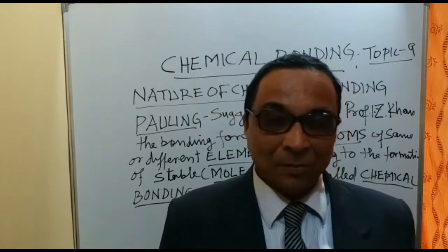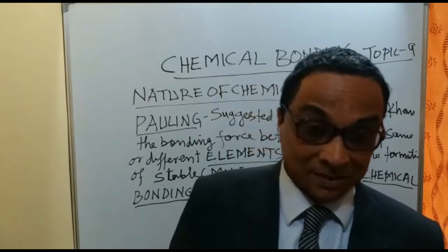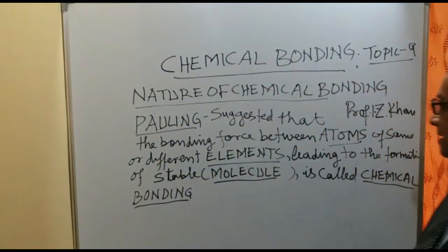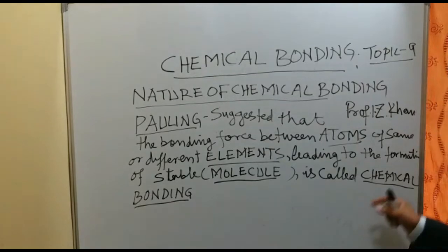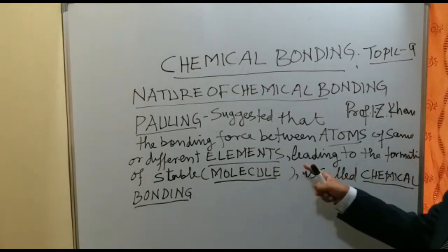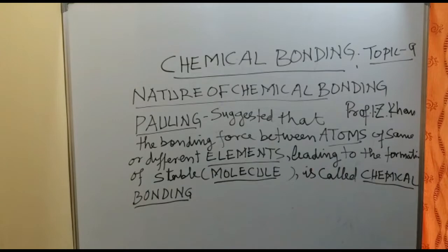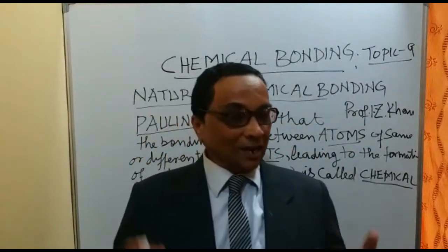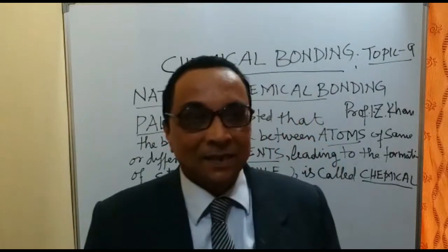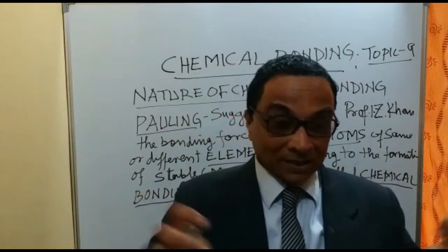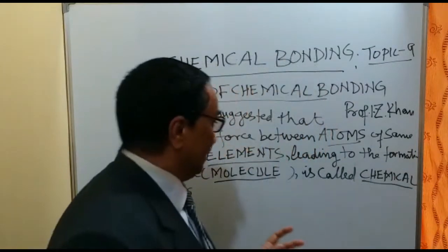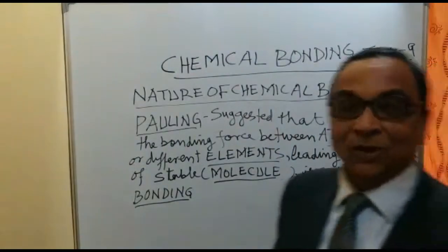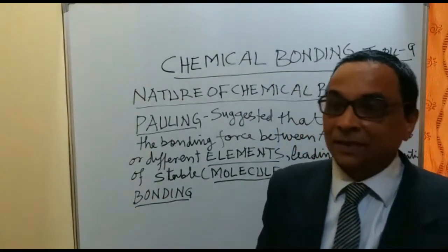Before going to electronic bonding, let me explain the concept of chemical bonding. It was suggested by Pauling. According to Pauling, the bonding force between atoms of the same or different elements leading to the formation of a stable molecule is called chemical bonding. According to him, chemical bonding involves electrostatic forces that give a stable molecule.